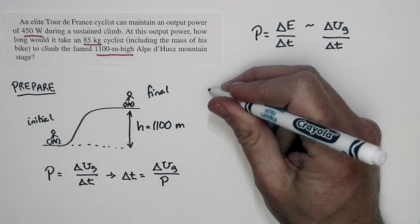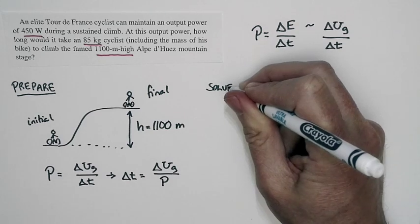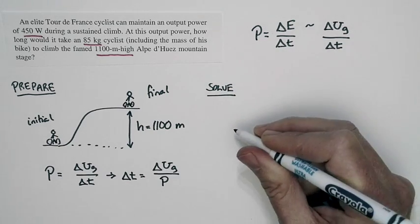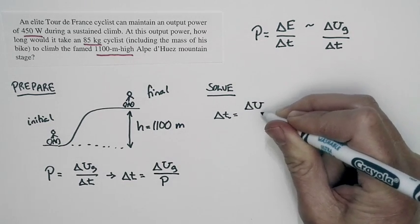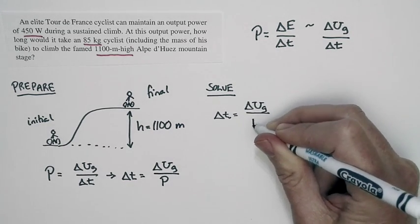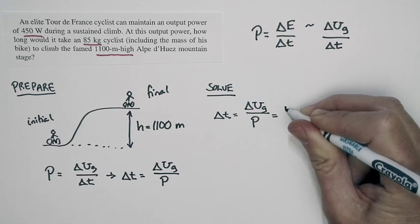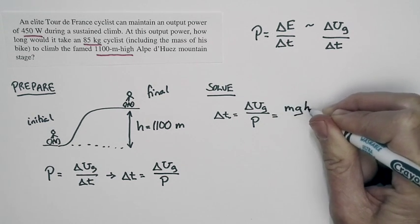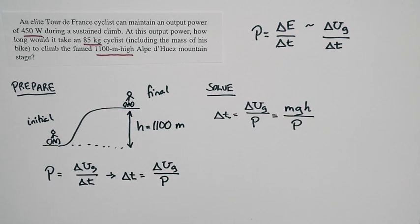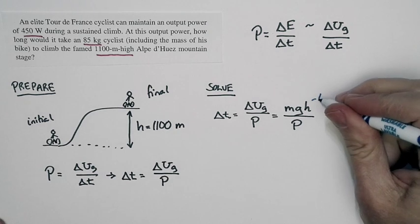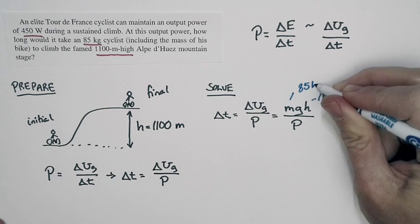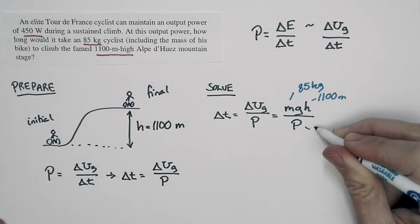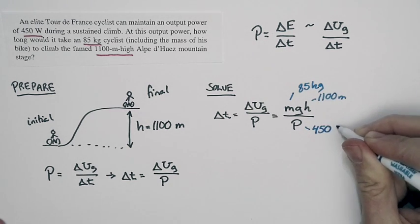And with that, we're ready for our solution. Our solution is fairly straightforward. Our time interval is equal to the change in potential energy divided by the power. Well, the change in potential energy is M times G times H. The height of the mountain that the cyclist is climbing is 1,100 meters. The mass of the cyclist is 85 kilograms, and the power the cyclist can provide is 450 watts.